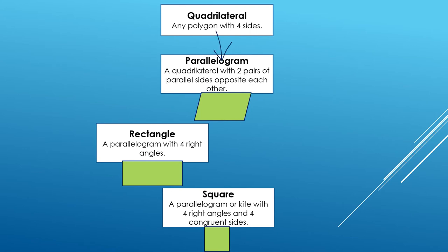Starting with a quadrilateral, then going to a parallelogram, and then to a rectangle, then to a square. Does this work? This does not work.